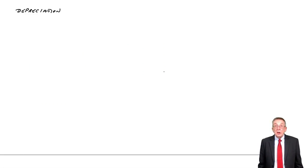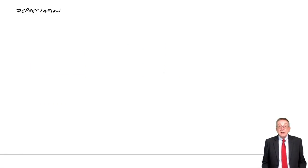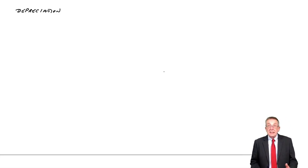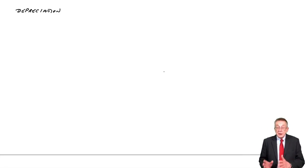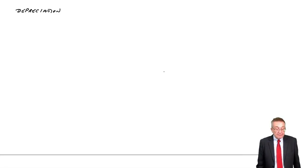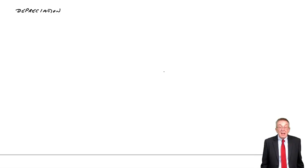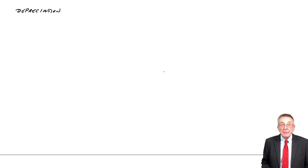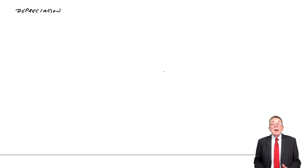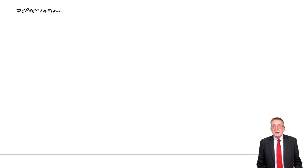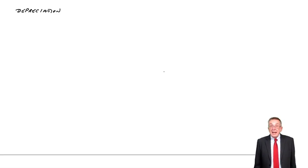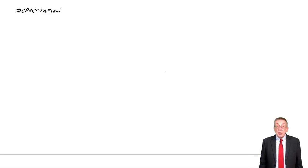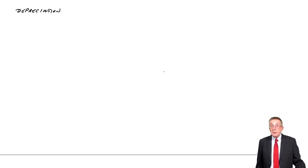We've been through in the previous lectures the two different ways of calculating depreciation: straight line and reducing balance. And as I said, that's really what's important to the exam, because there's not a lot of debits and credits in the exam. However, to be safe, let me show you what the double entries are and how we actually account for it.